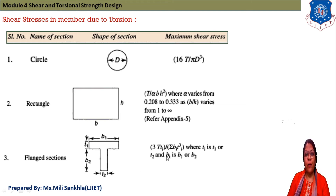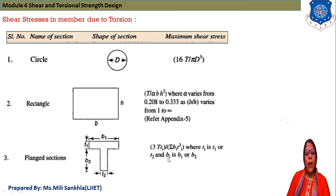For a flange (T) section, the dimensions are: width of flange, depth of flange, width of web, and depth of web. The equation for shear stress is τ = 3T·Ti / (Σ Bi·Ti³), where Ti is T1 or T2 (thickness values) and Bi is B1 or B2 (width values).